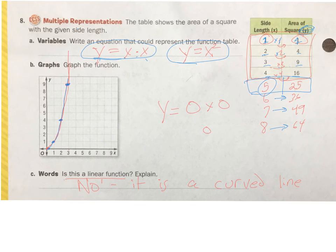So, c says, is this a linear function? And no, it is not a linear function. Why is it not? Because it's a curved line. Curved. If it was straight, if it's a straight line, then it is a linear function. But this is not straight. This has a curve to it. And so it is not linear.